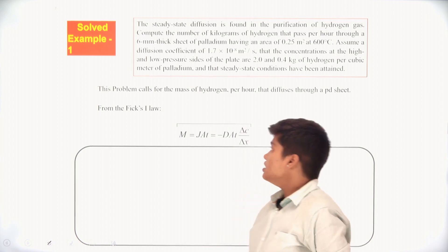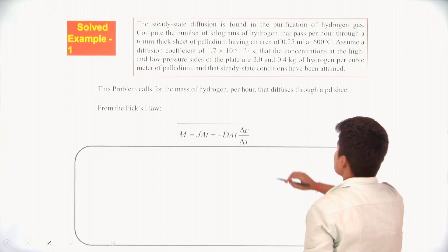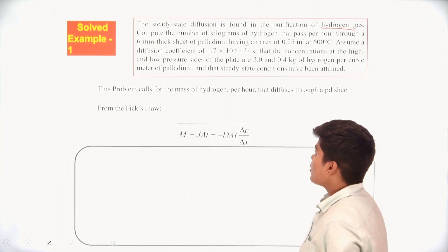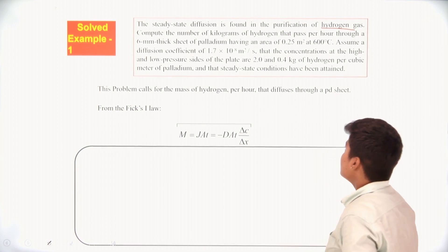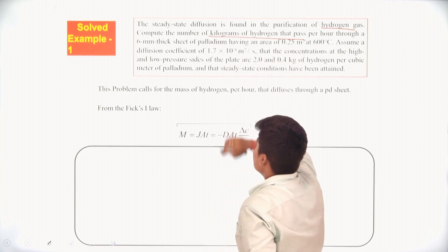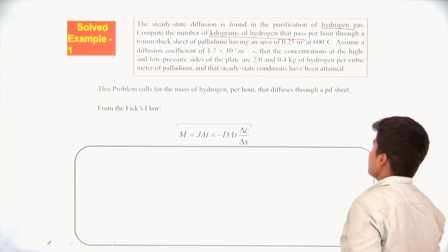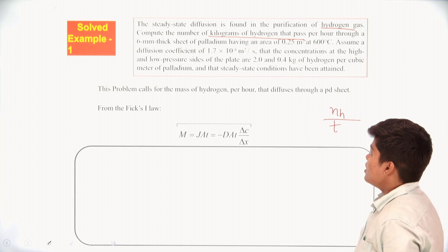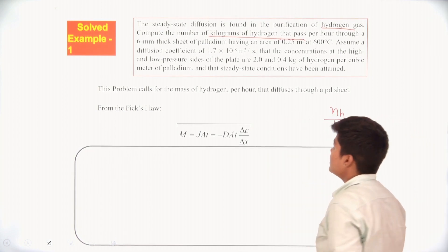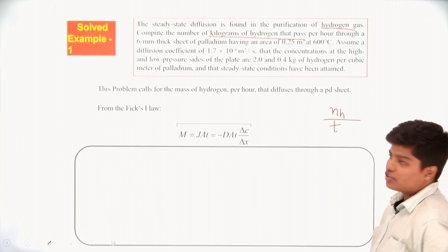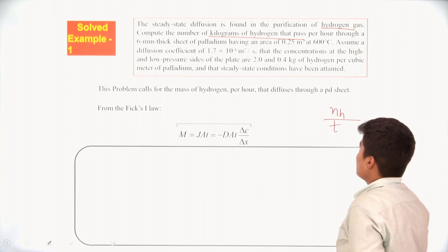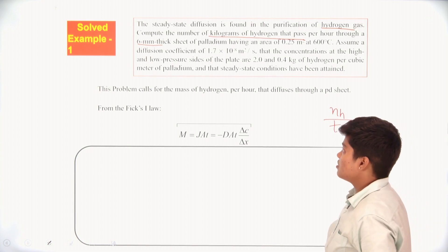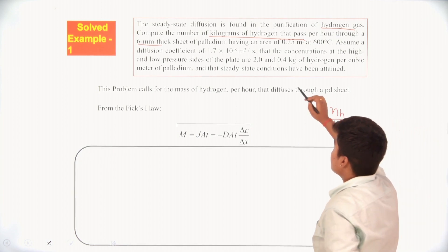The question states: steady state diffusion is found in the purification of hydrogen gas. Compute the number of kilograms of hydrogen that pass per hour through a 6 millimeter thick sheet of palladium having an area of 0.25 meter squared at a temperature of 600 degrees. The 6 millimeter thickness is the distance dX over which diffusion is carried out, and the area A is 0.25 meter squared.